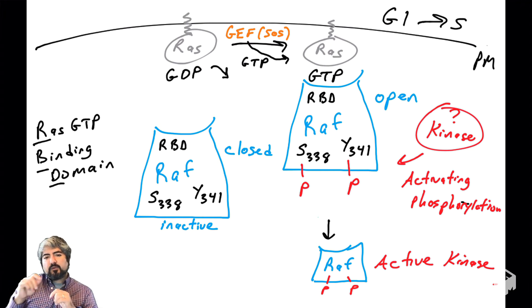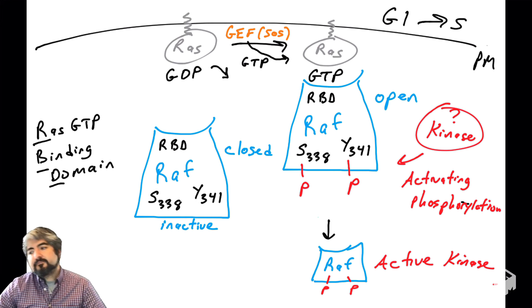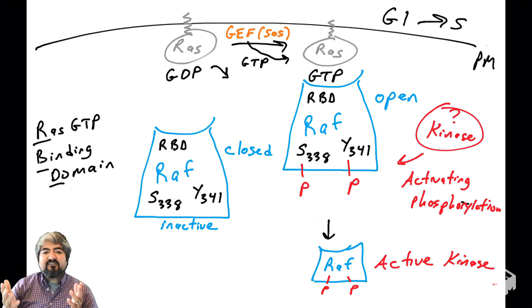You'll notice I wrote question mark kinase. It is not clear what kinases phosphorylate RAF on those hydroxyls, on the serine and on the tyrosine. We're not going to talk about it now because it could be a little confusing. But suffice it to say, some kinase—could be multiple kinases, one on the tyrosine, another one on the serine—will phosphorylate RAF, and then RAF will become active. You need a number of things to occur for RAF to activate: binding to RAS GTP, change in conformation, and phosphorylation on at least these two residues. That's how RAF activity is regulated.